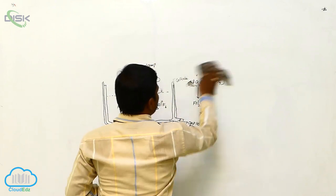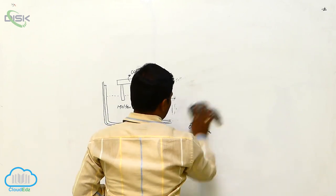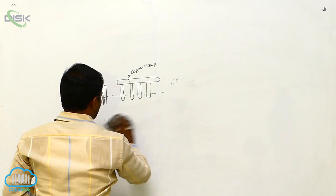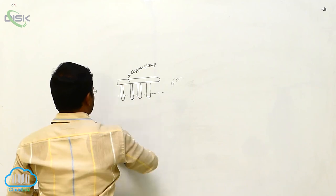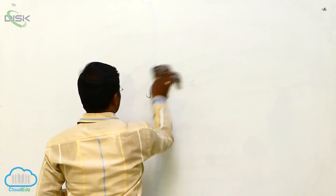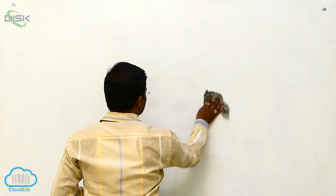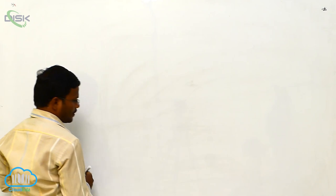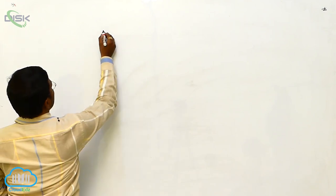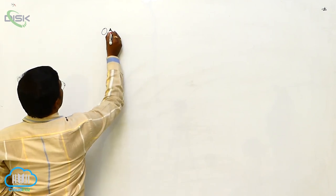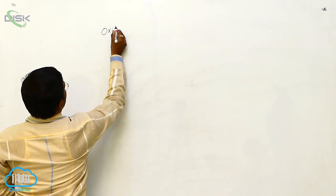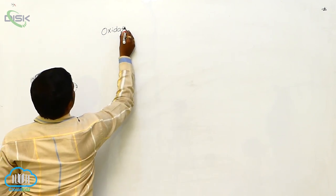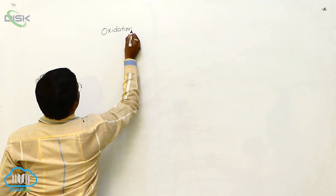Next, oxidation and reduction. Remember, as I told you just now, during the extraction of metals from their ores, oxidation and reduction take place simultaneously.